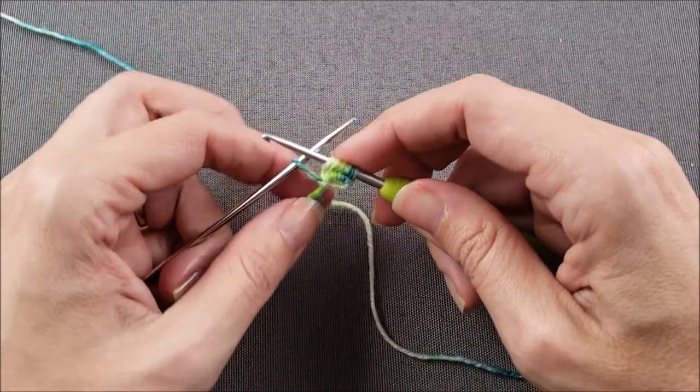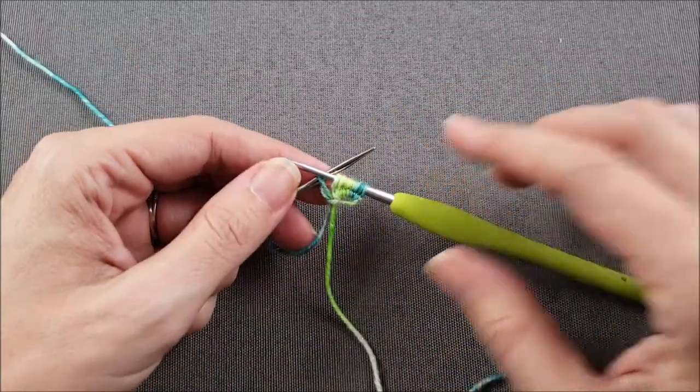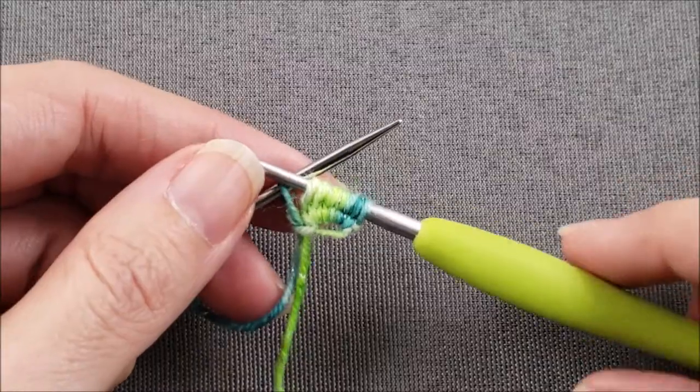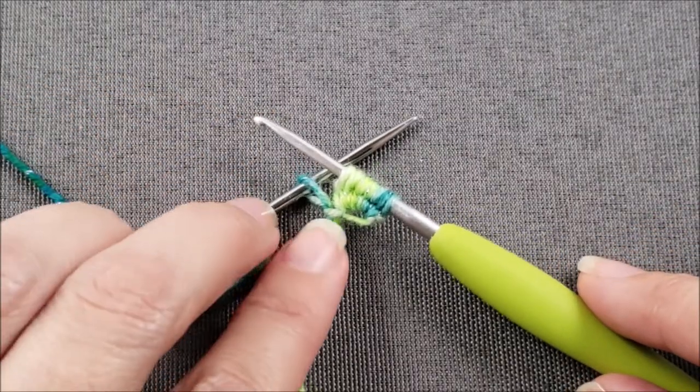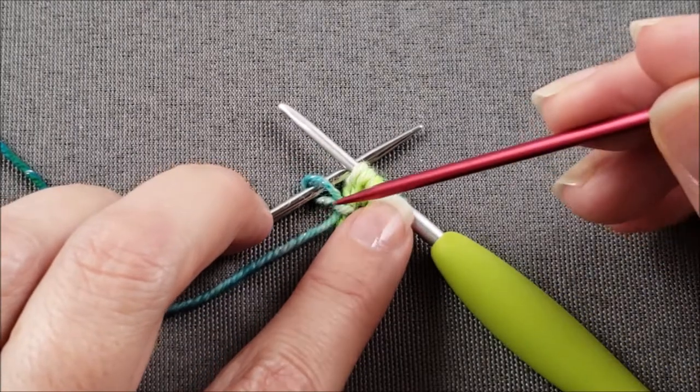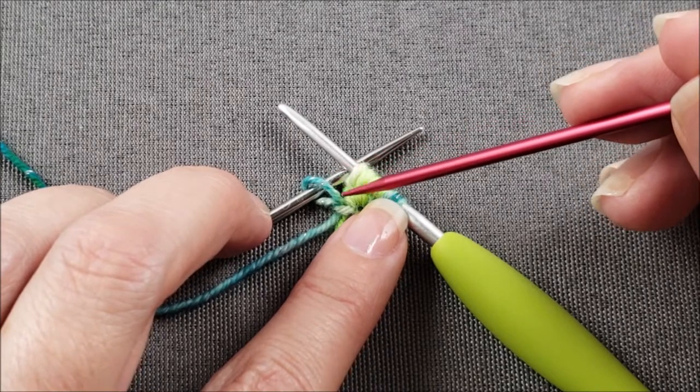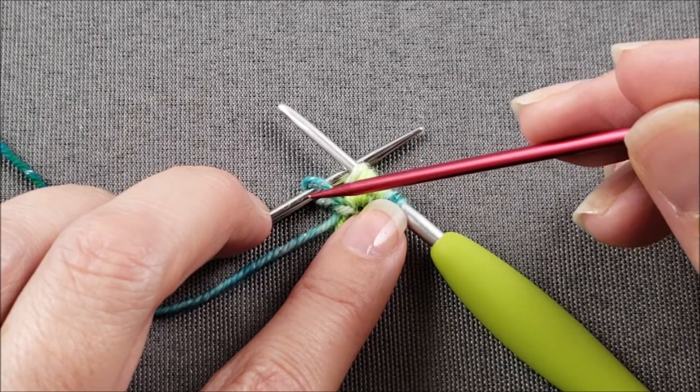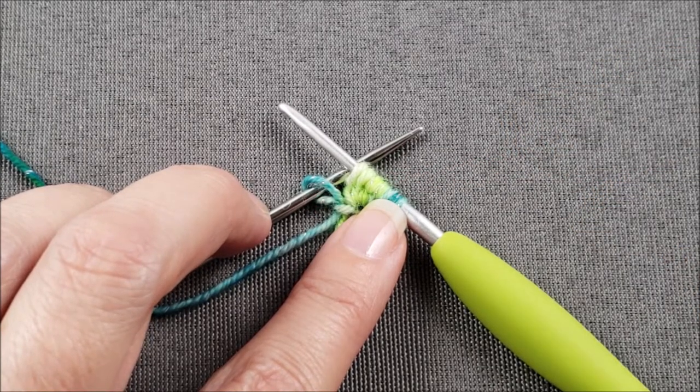And the reason we do this is we want to make sure that our stitches are mounted properly. And let me zoom in here and I'm going to open up this first stitch so you can see what I mean. You want the right leg of the stitch, this right leg, to be coming over the front of the knitting needle and the left leg of the stitch should go to the back of the knitting needle.